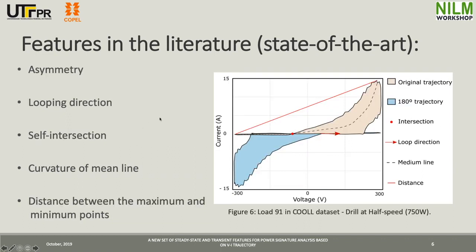And asymmetry — in this case this load is asymmetric, shown in blue and pink. Looking direction is the direction of points in the trajectory. Self-intersection is the red point. Curvature of the mean line is shown here.